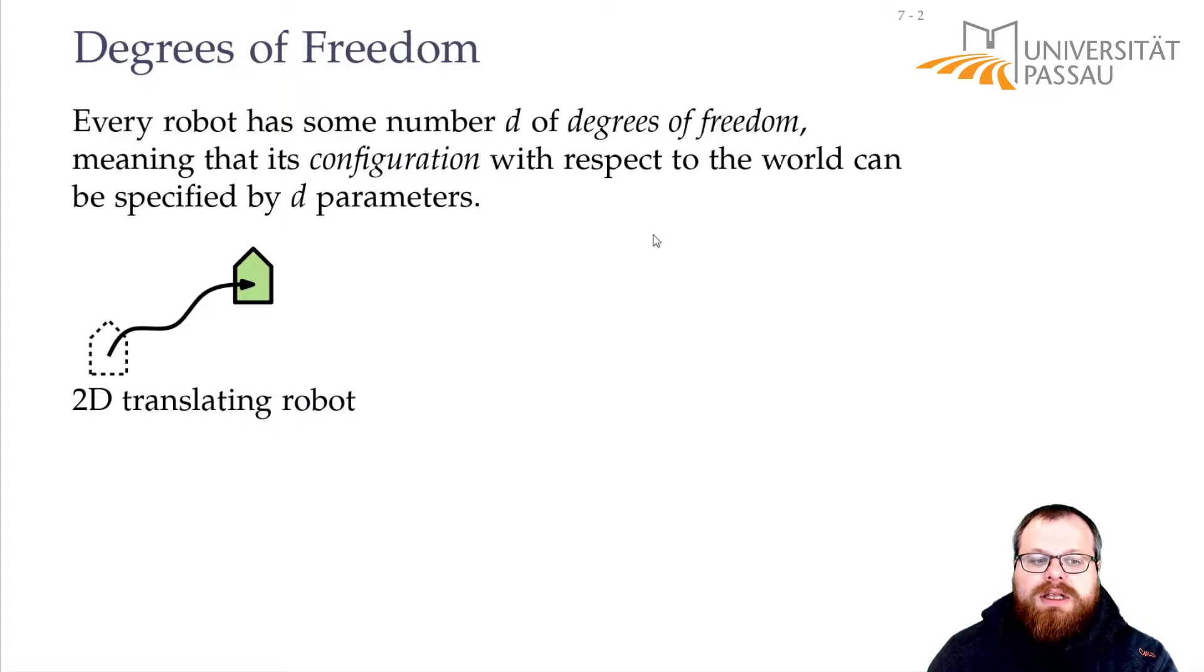For example, if we have a translating robot in 2D, so it can move around but it cannot rotate, then we have two degrees of freedom because we can move horizontally and vertically.